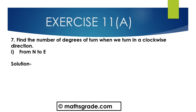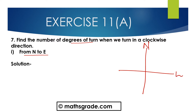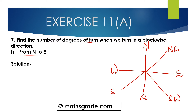Question number 7: Find the number of degrees of turn when we turn in a clockwise direction. First, from North to East. This is North, East, South, West. From North to East, this is 90 degrees. So the number of degrees of turn when we move in a clockwise direction from North to East is 90 degrees. The angle is 90 degrees.